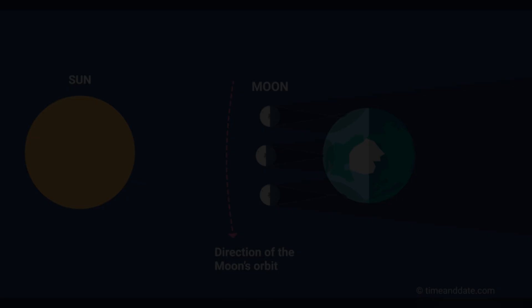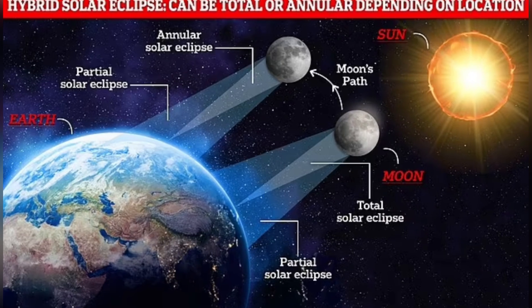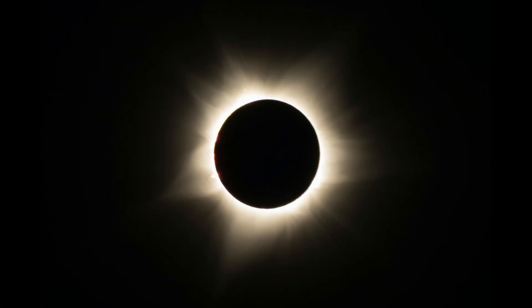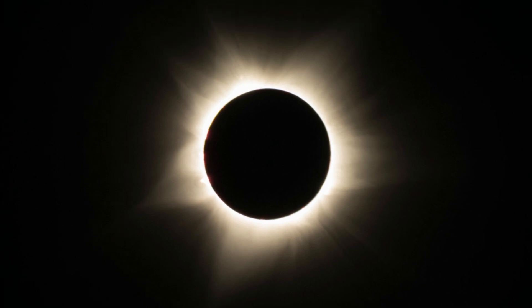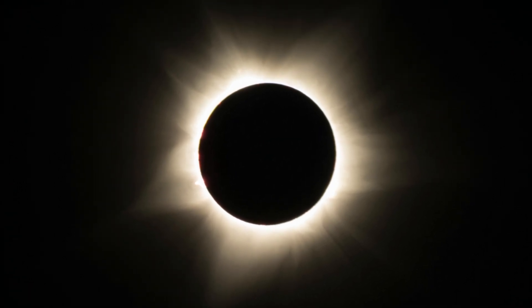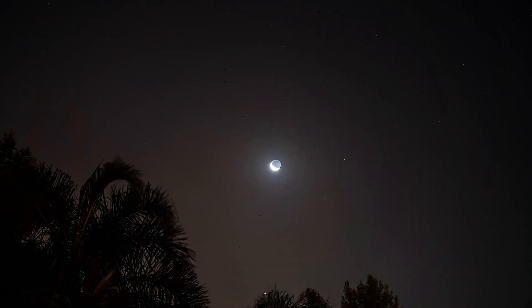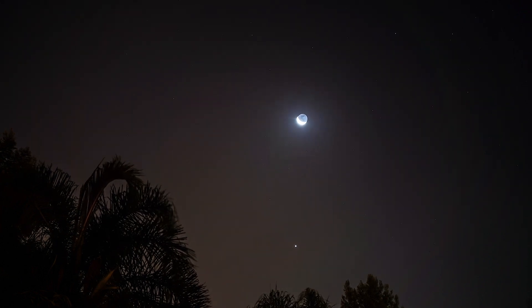But what makes the upcoming solar eclipse even more unique? Well, it's a hybrid solar eclipse — a rare kind that shifts between a total and an annular eclipse. During this event, some parts of the world will witness a total solar eclipse, while others will see an annular one. This particular hybrid eclipse is even more special because of its duration: most solar eclipses last for a few minutes, but this one will last for more than six minutes in some locations — a spectacle that hasn't been seen in over a century.